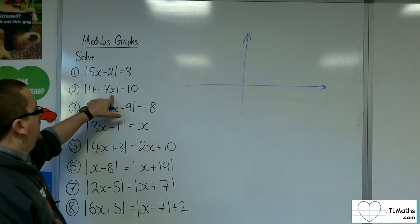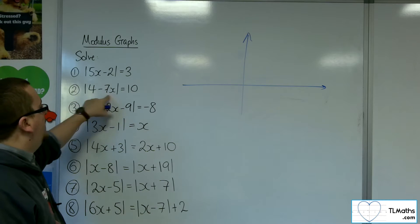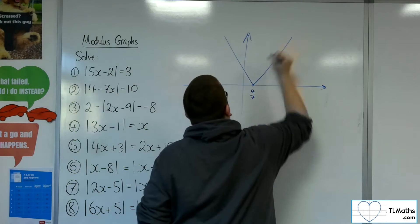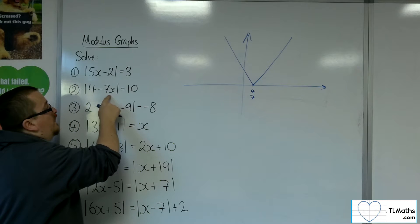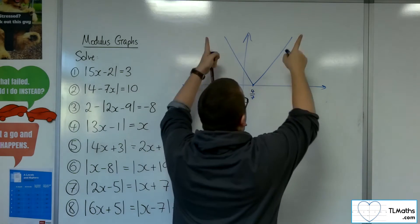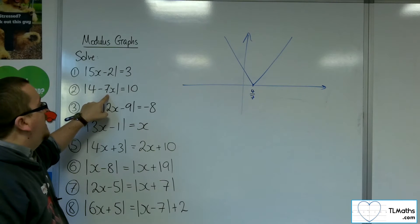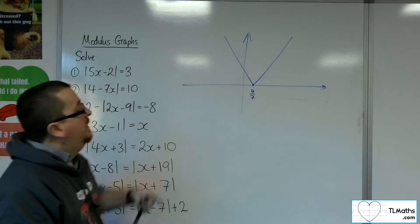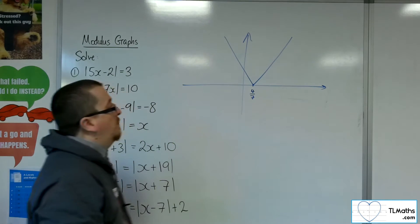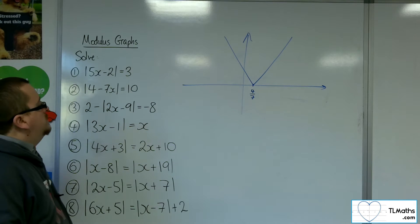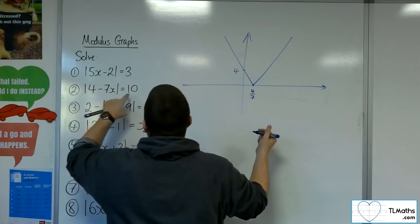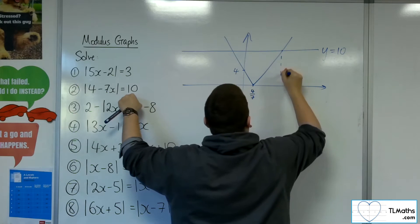y equals mod of 4 minus 7x will hit the x-axis when the expression is 0, so that will be at 4 sevenths, and we'll get a V-shape. The minus sign in front of x doesn't make any difference to which direction the V-shape goes — the modulus of 4 minus 7x will just produce positive results, except 0 at 4 sevenths, so it's completely in the positive area. It crosses the y-axis at 4, because when x is 0, mod 4 is 4. Then y equals 10 gives us two intersection points.